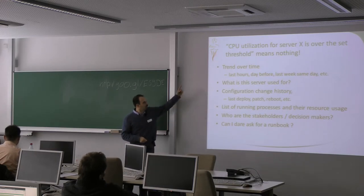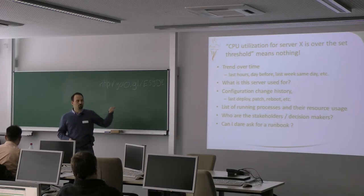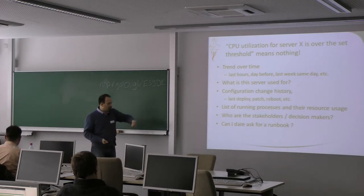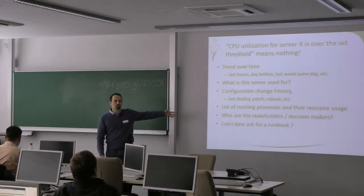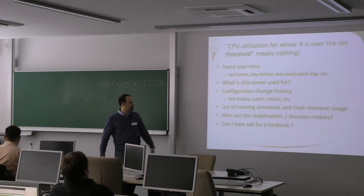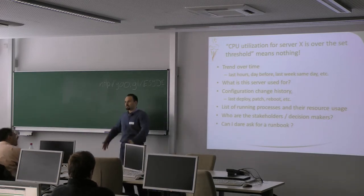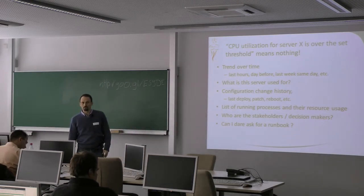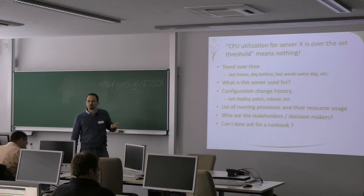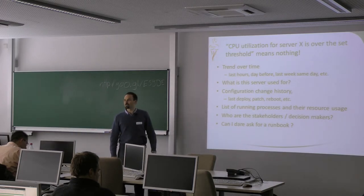I also want to see the running processes on the device and which one is using all the CPU. It's easy to get from the box — run a top, get the process utilization, and assign it to the alert. And even contextual information like: the CPU utilization is high, there seems to be a problem, I need to restart this machine — but can I decide that? Who am I supposed to ask? Do you really want me to restart your box just because the CPU utilization is high?